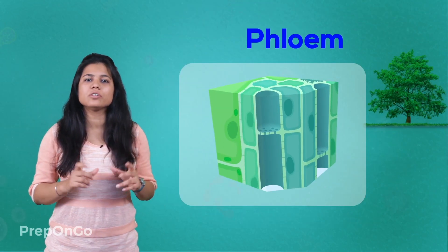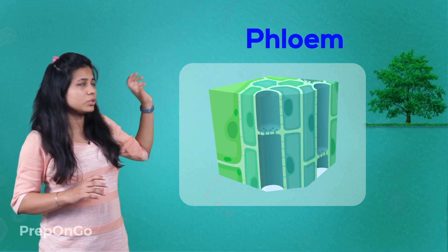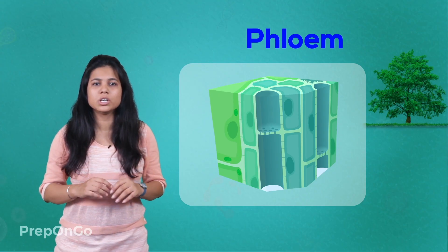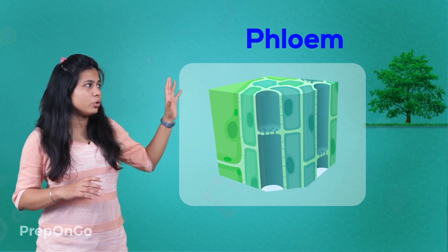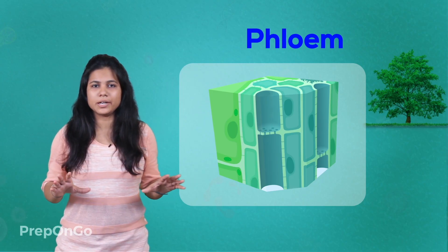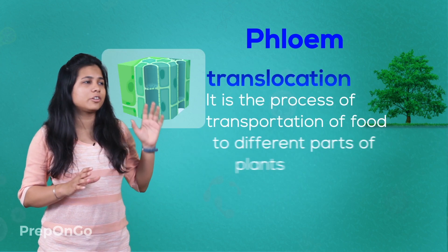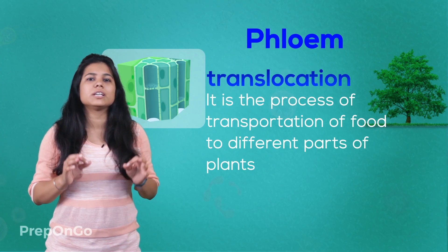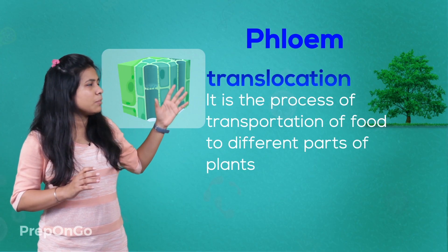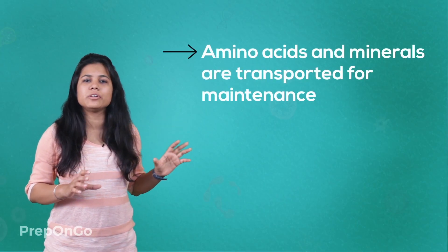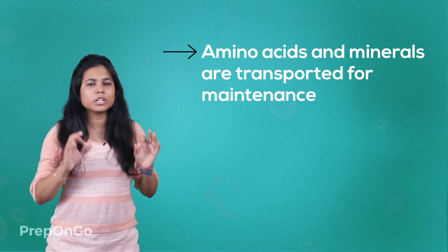Now let's see how phloem works. Water reaches the leaves, where it works with chlorophyll and sunlight to produce food through photosynthesis. The food produced needs to be transported to different parts of the plant. This soluble food is transported by the process called translocation, with the help of vascular tissues called phloem. Not only food, but substances like amino acids and other minerals are also transported for proper plant maintenance.